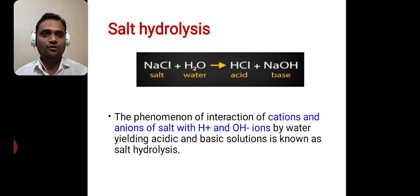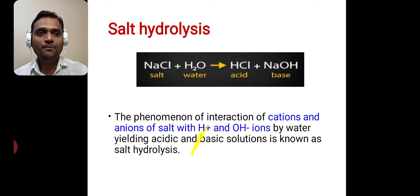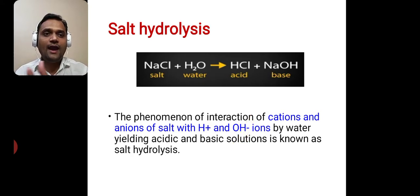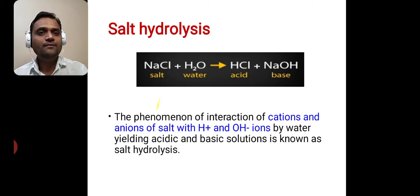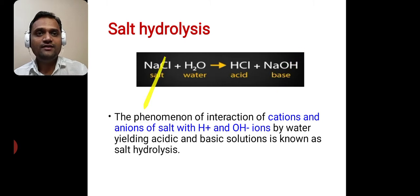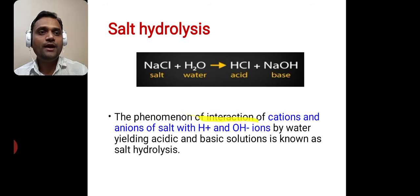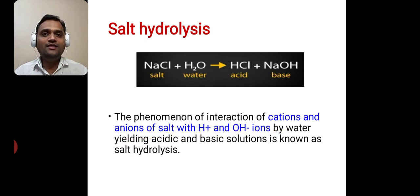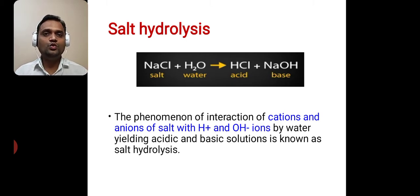NaCl has Na⁺ cation and Cl⁻ anion. H₂O gives H⁺ and OH⁻. Na⁺ combines with OH⁻ to form NaOH, while Cl⁻ combines with H⁺ to form HCl. The phenomenon of interaction of cations and anions of salt with H⁺ and OH⁻ ions from water, yielding acidic and basic solutions, is known as salt hydrolysis. Salt hydrolysis and neutralization are opposite reactions.